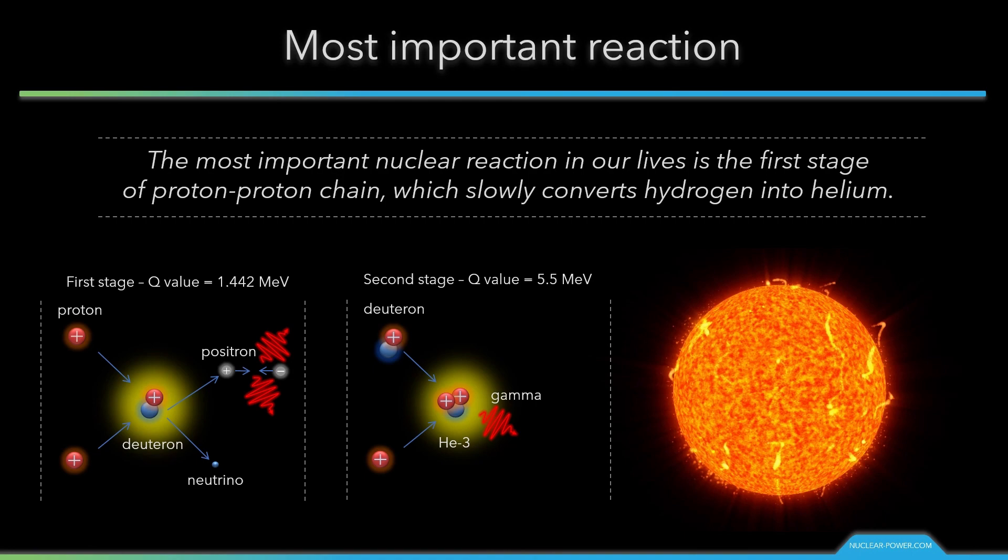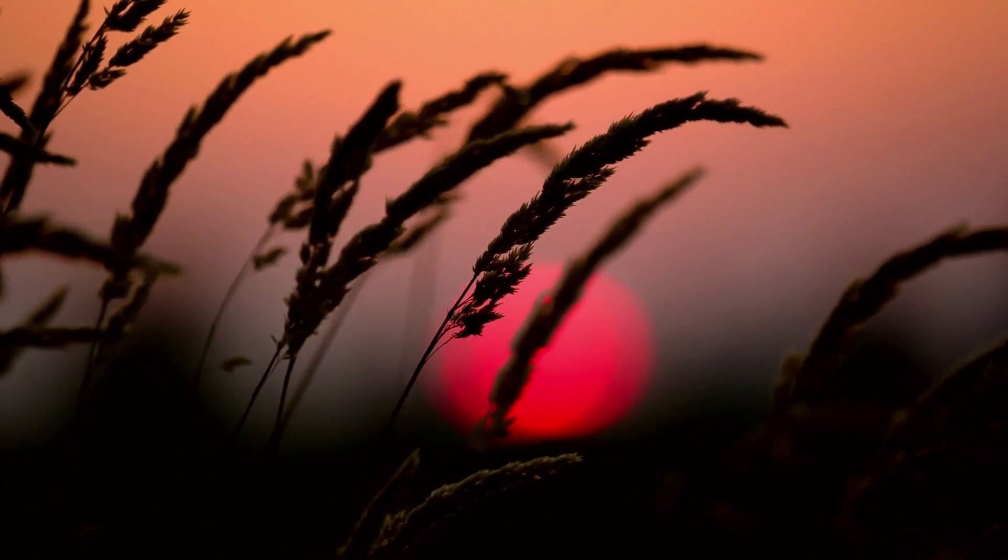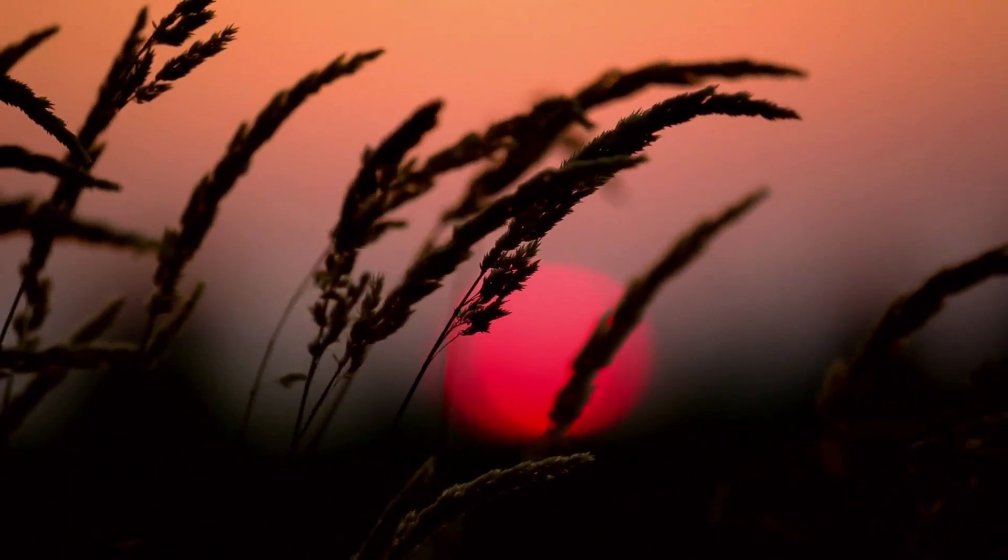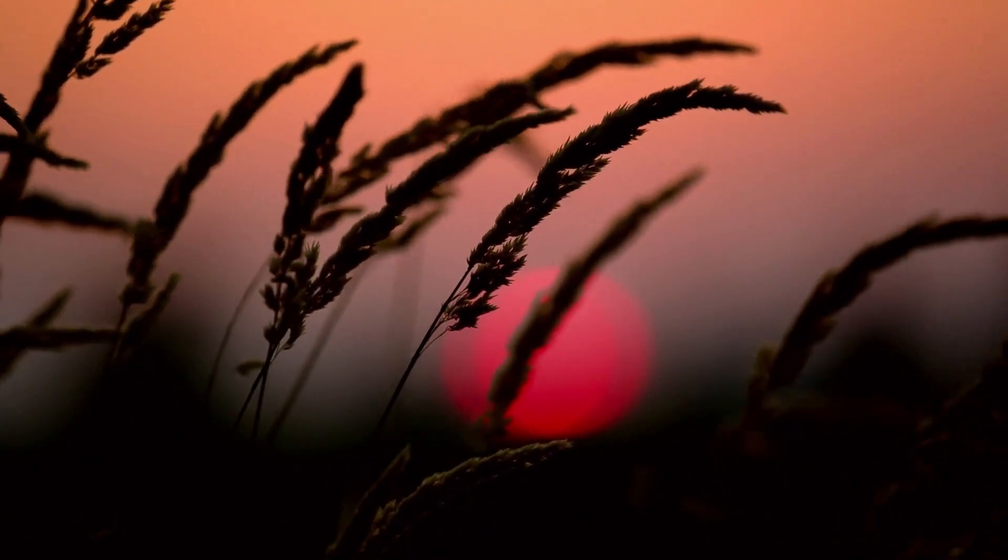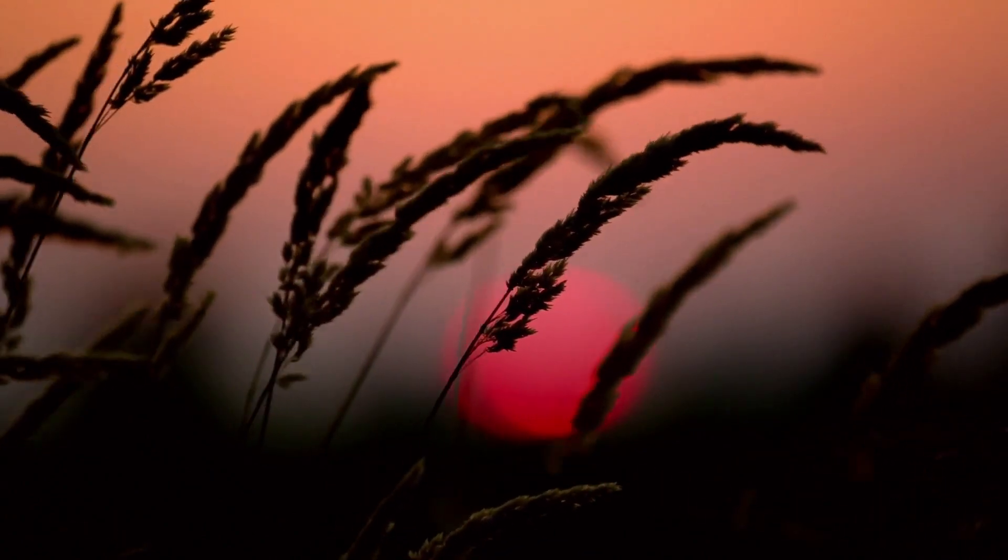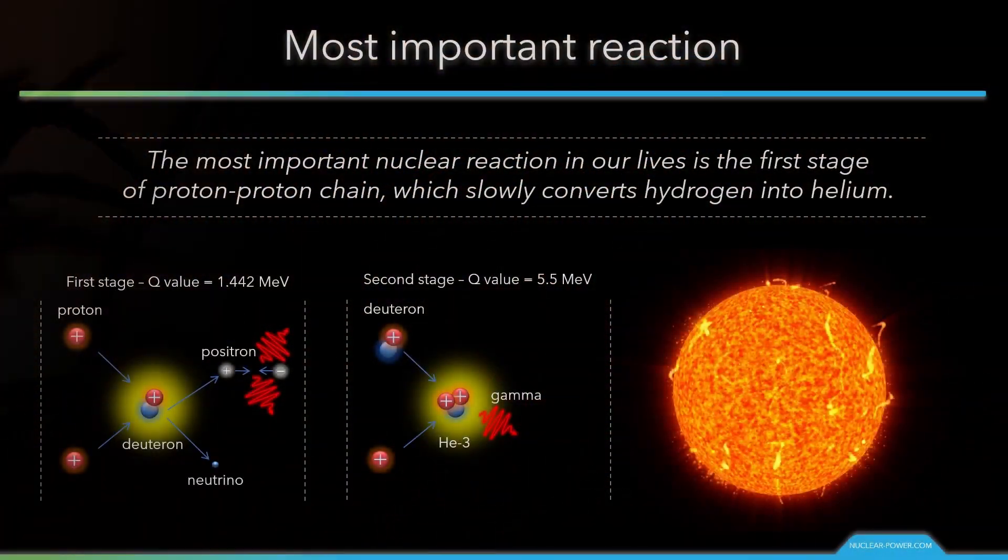And why is the first stage so important? As can be seen, the first stage of the proton-proton chain controls the rate at which the fuel burns in the Sun so that it is neither too fast nor too slow. This energy supports almost all life on Earth by photosynthesis and drives Earth's climate and weather.